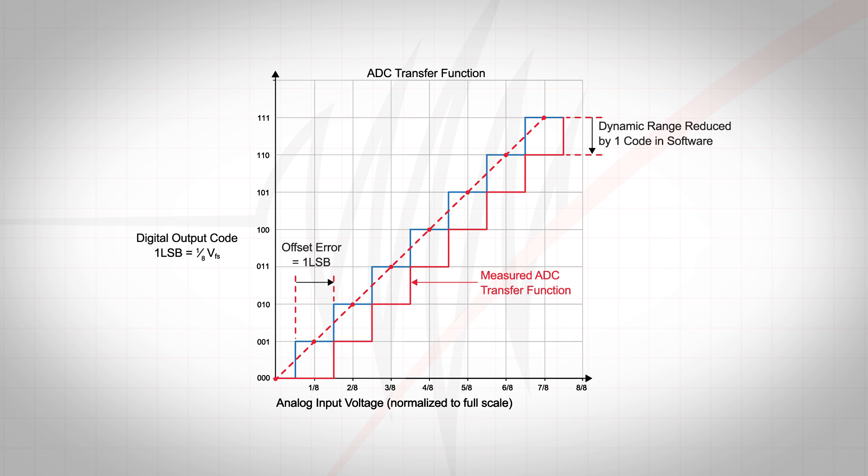For example, in an 8-bit ADC, the ideal first transition point is half LSB, or one-sixteenth of the full-scale voltage range. However, it could be that the first measured transition doesn't occur until one LSB later, at three-sixteenths of the full-scale voltage range. Thus, we have a positive offset.